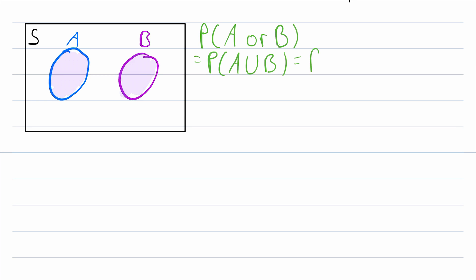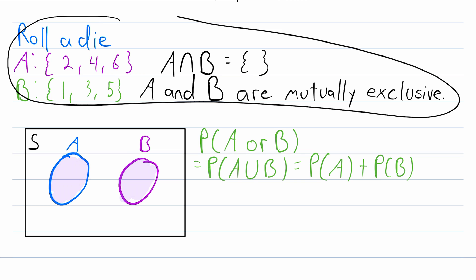we just have to add their individual probabilities. The probability of A plus the probability of B. So if A and B are mutually exclusive events, this is the probability of A union B. It's the sum of their individual probabilities. For example, looking back up here,